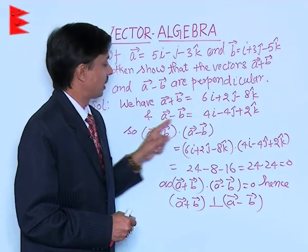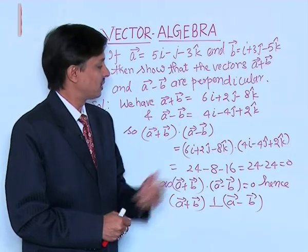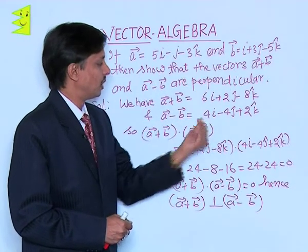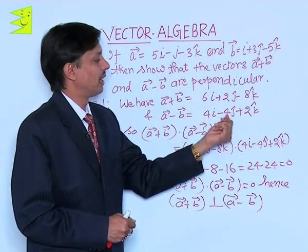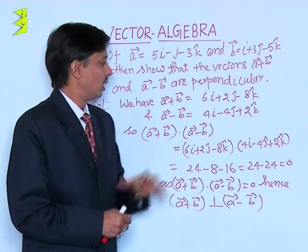Now for vector A minus B, we subtract B from A, which gives us A minus B equals 4i minus 4j plus 2k.